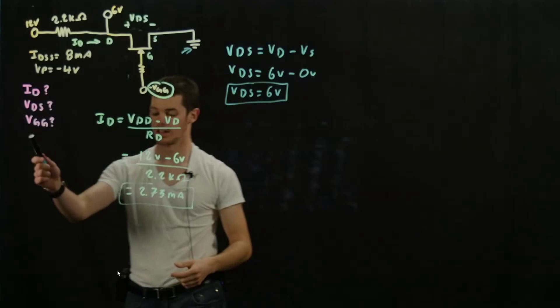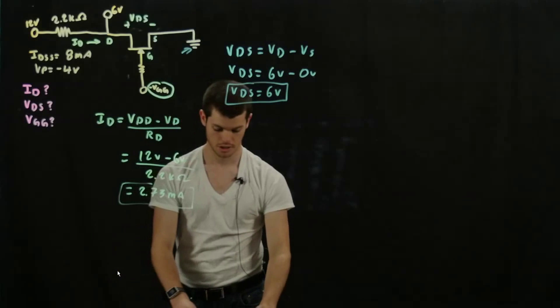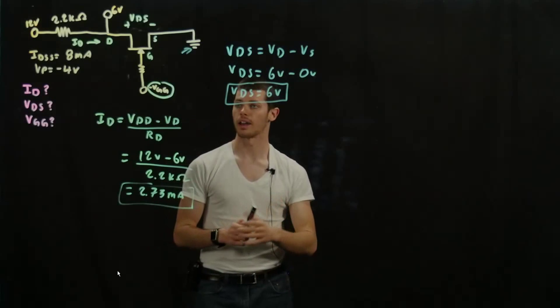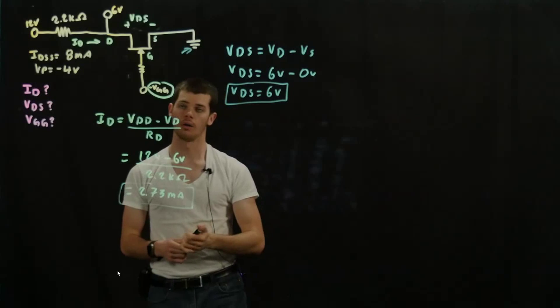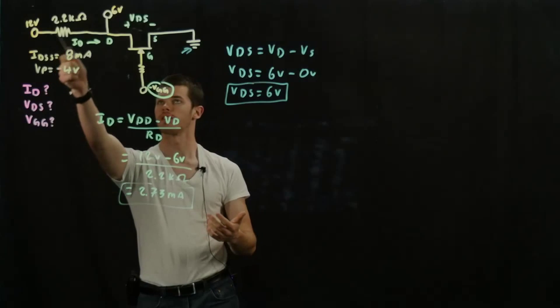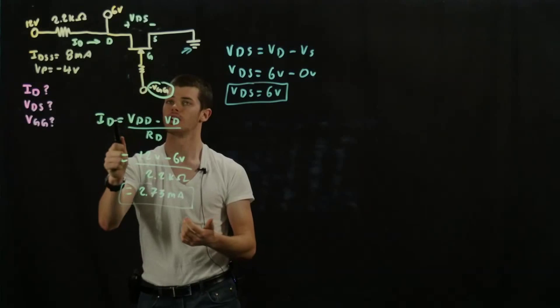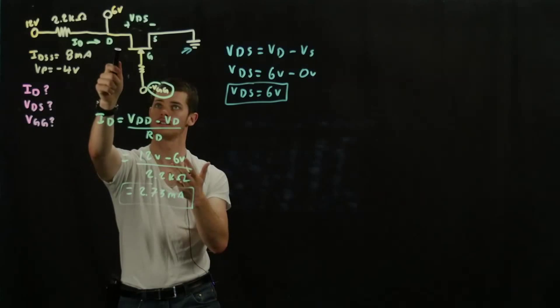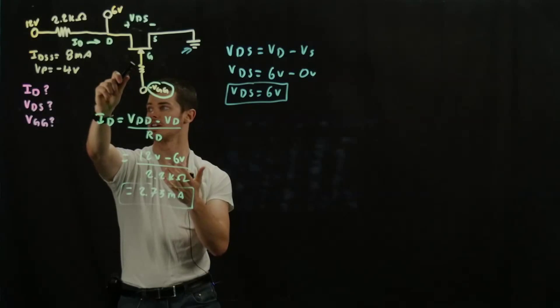Alright, now we have one more thing to find, VGG. This seems to be a little more complicated, but not too bad. We've got to do a little thinking here. We've got to think, what's VGG equal to? Well, we have the VD over here. We have VG, Vs. If we look at it, we can assume that VGS is equal to VGG, negative VGG,